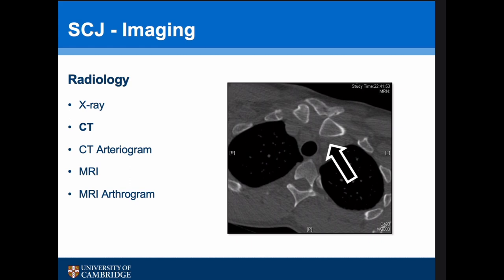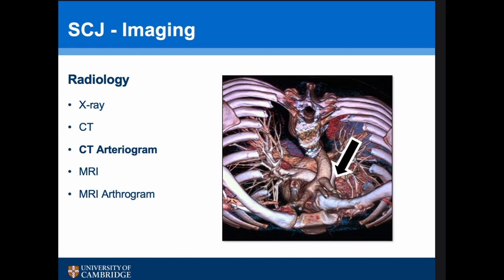A CT arteriogram is an essential investigation for any acute posterior dislocation, as it lets us know what's happening to those important retrosternal vascular structures. In fact, they're rarely damaged — often there's only compression — but it's a very important investigation.